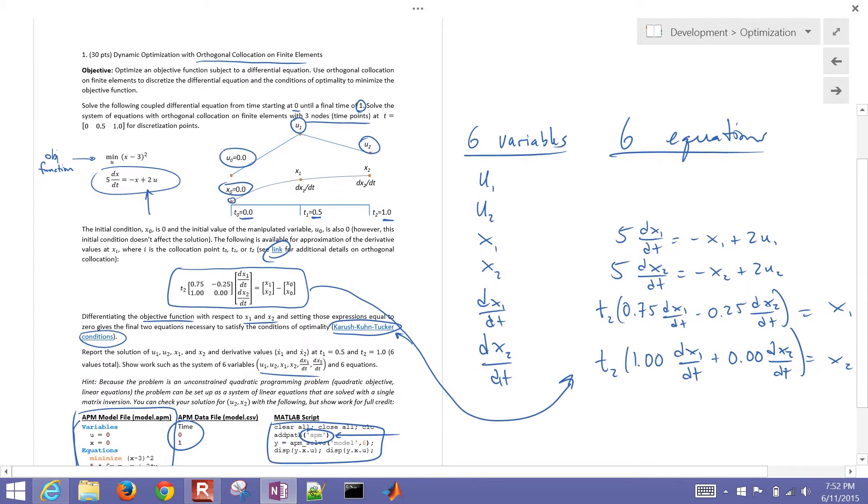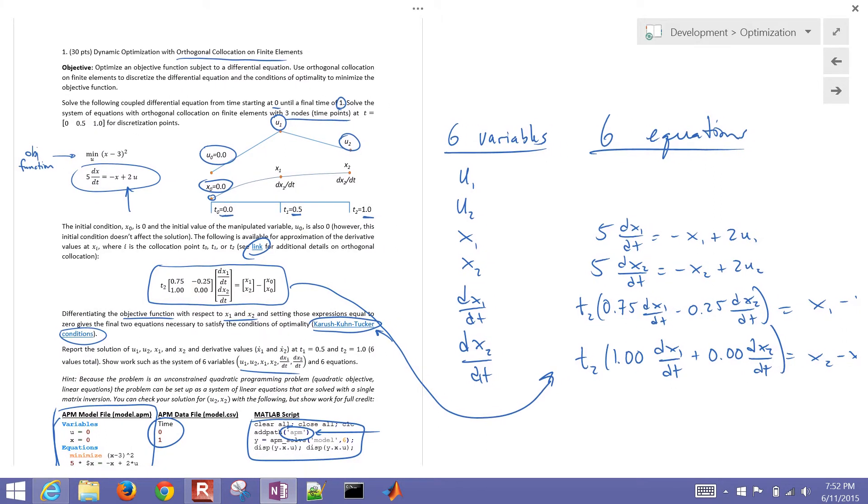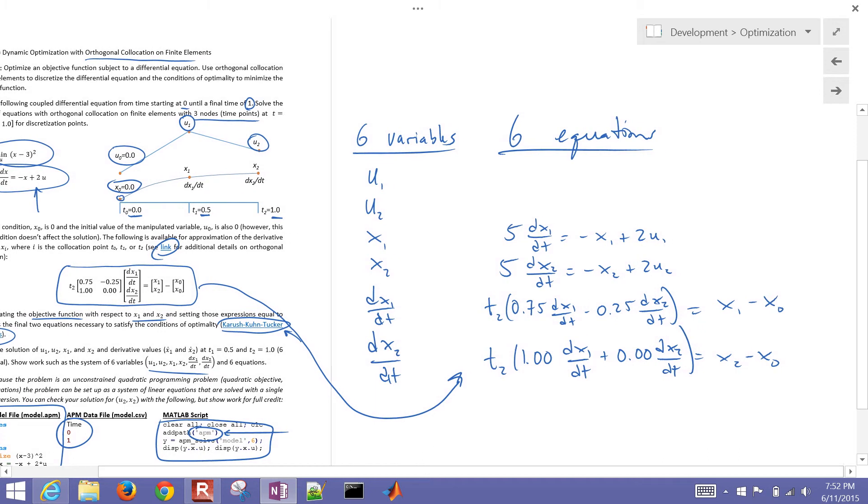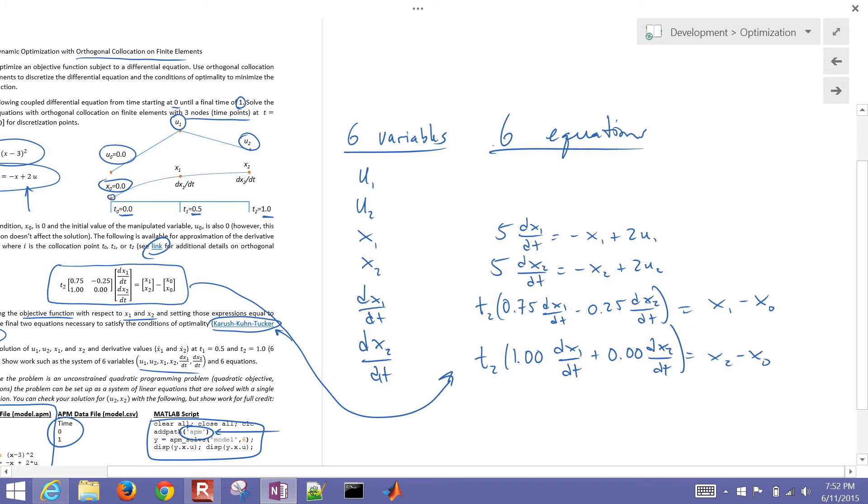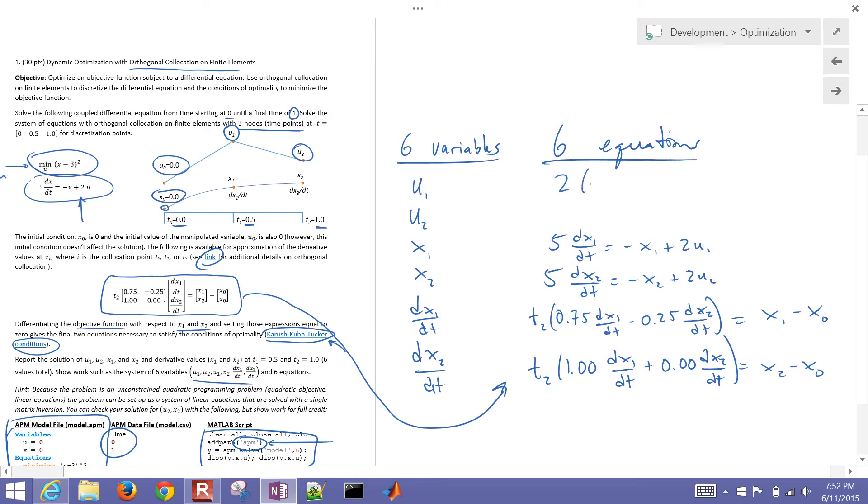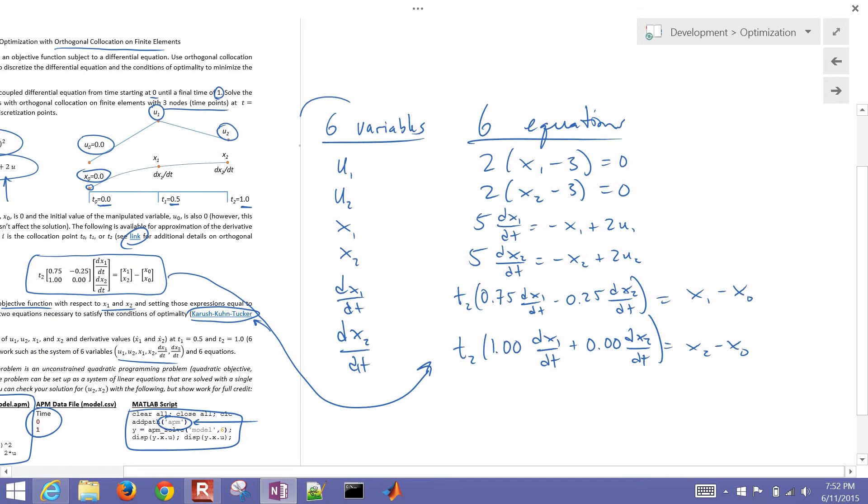So I have my two additional equations just from my collocation. Now the other thing I need is also to differentiate the objective term right there and then set it equal to 0 for the two nodes as well. So that one just differentiated is going to be 2 times x1 minus 3 equals 0 and 2 times x2 minus 3 equals 0.